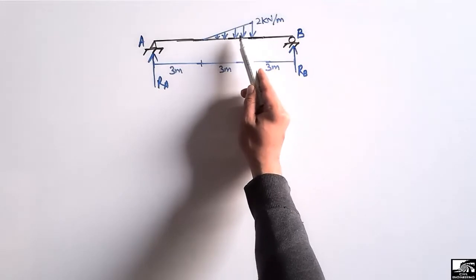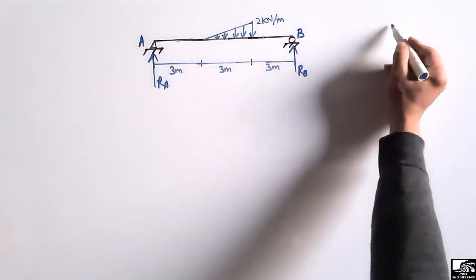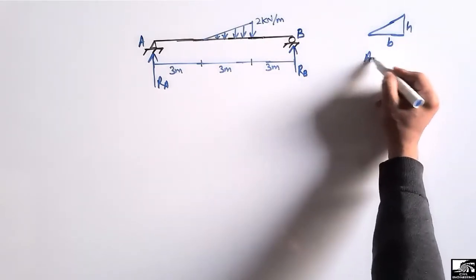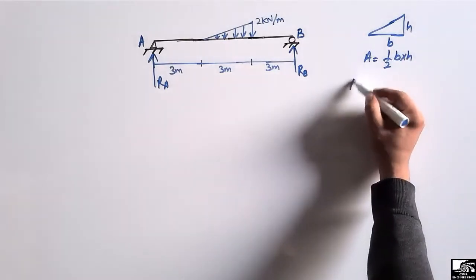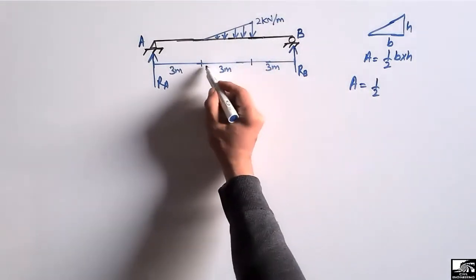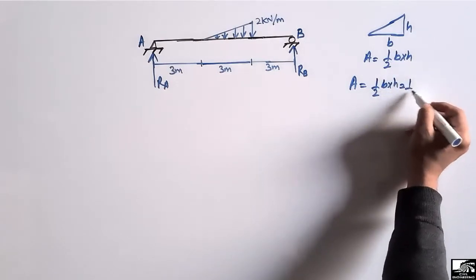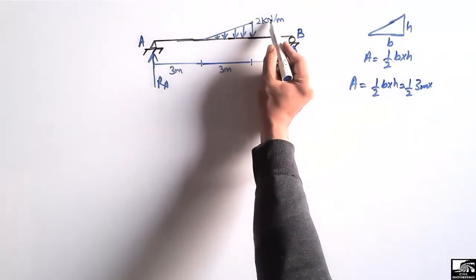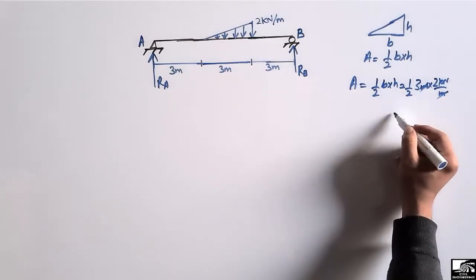To find out how much load is acting on this beam from this triangular load, we can find out the area of this triangle. If this is a triangle, this is the base and this is the height, so we can find the area by the formula: half base into height. So half base is 3 meters multiplied by height, which is 2 kilonewton per meter.